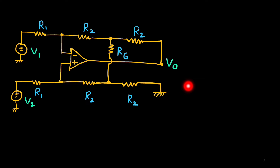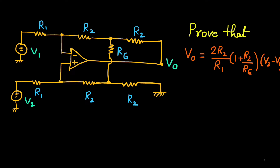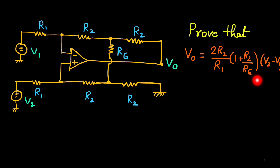Now we want to find out the expression for output V0 in terms of V1 and V2. We want to prove that V0 equals 2 times R2 upon R1 times (1 plus R2 upon RG) times (V2 minus V1). You can see that V0 is proportional to V2 minus V1, the difference between non-inverting and inverting potential. Thus this circuit is a difference amplifier with gain factor 2(R2/R1)(1 + R2/RG).